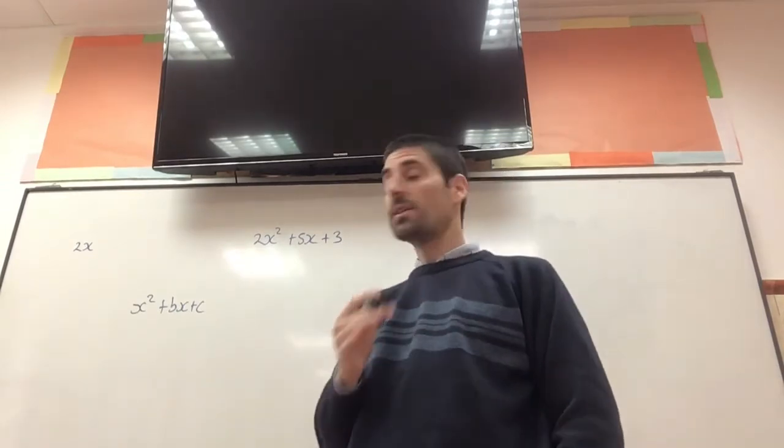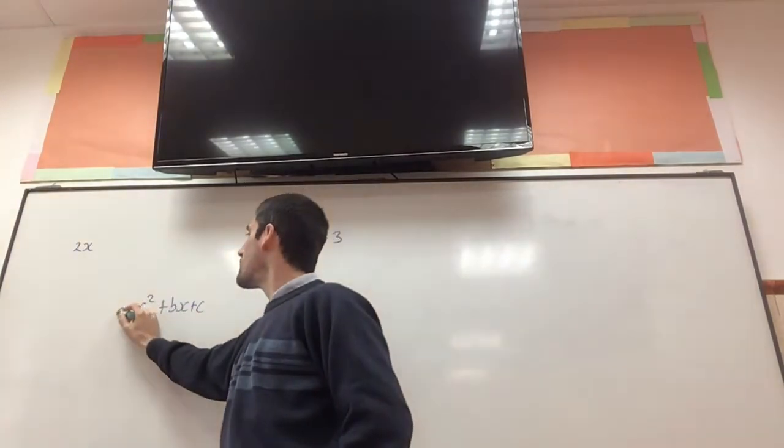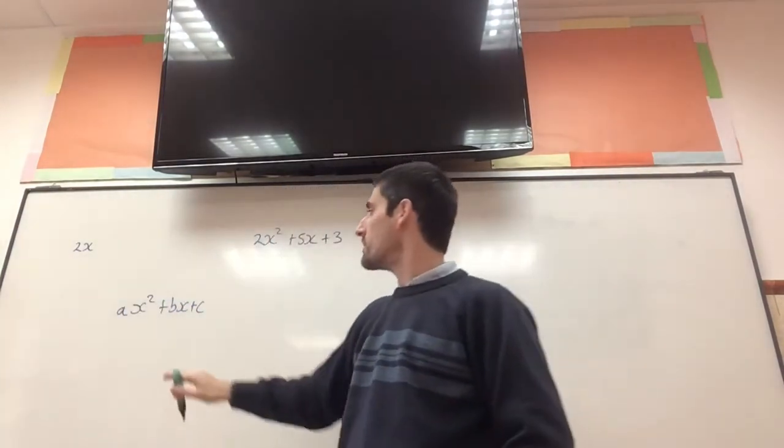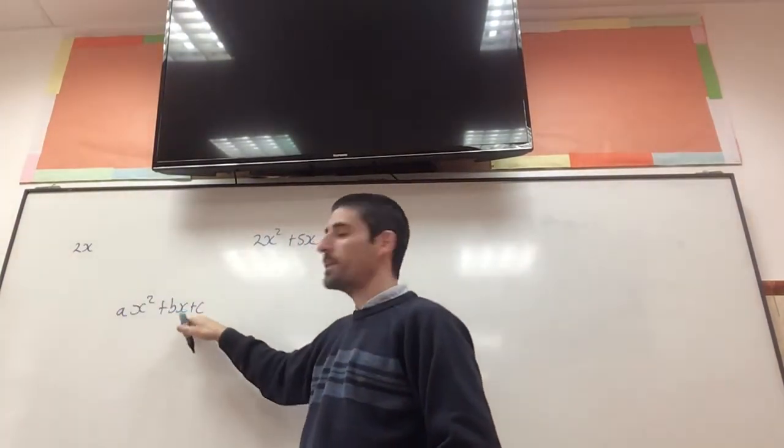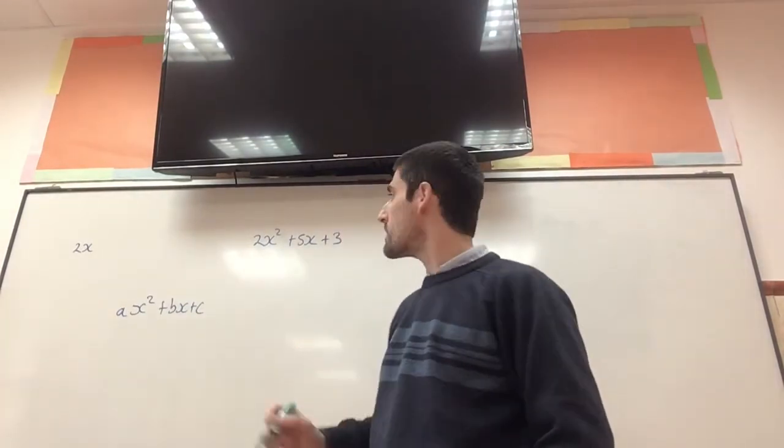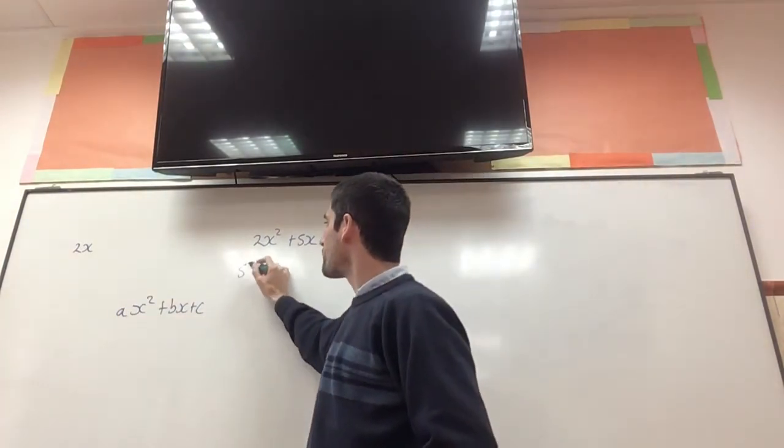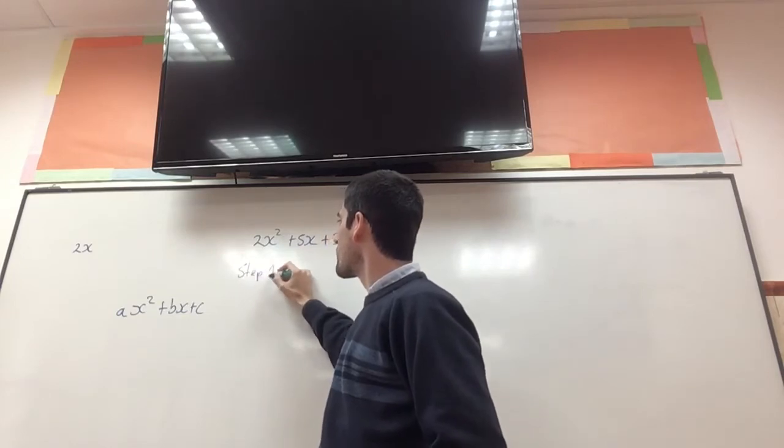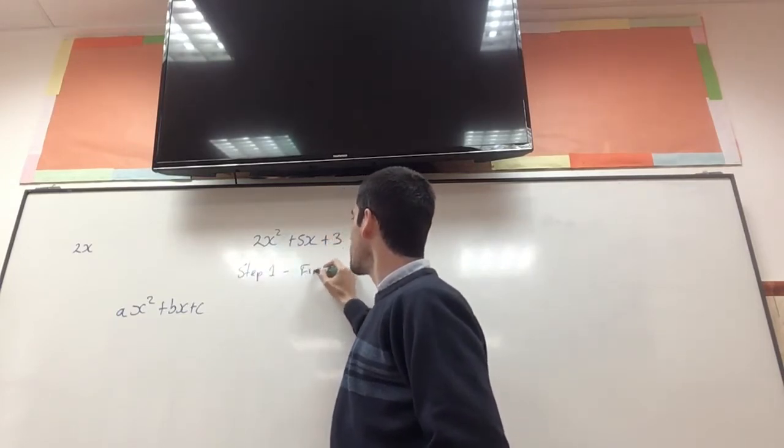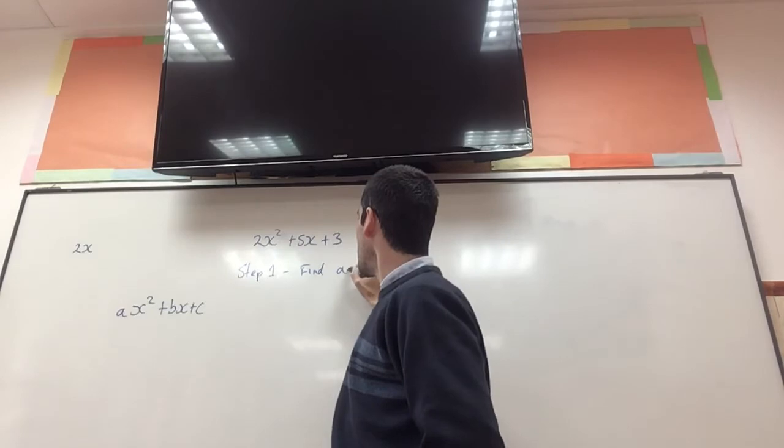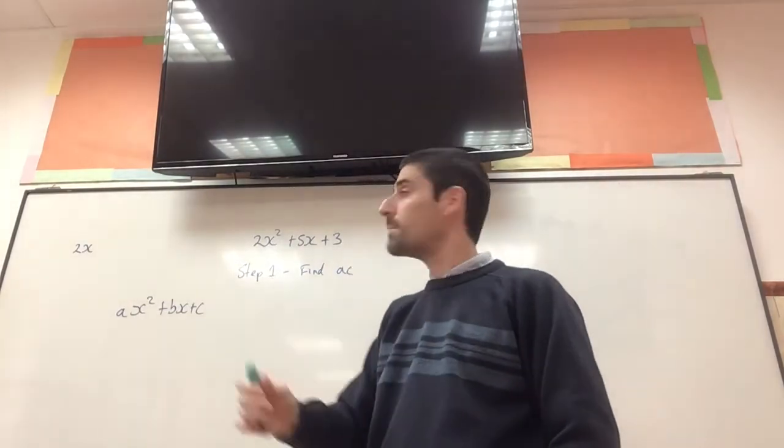So, in general, for a quadratic expression in the form ax squared plus bx plus c, what we need to do is as follows. Step number one. We have to find ac. So, a times c.